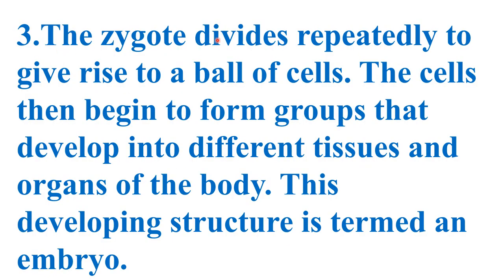The zygote divides rapidly to give rise to a ball of cells. The cells then begin to form groups that develop into different tissues. Cells make tissues, tissues make organs, organs make organ systems, and organ systems make an organism. This developing structure is termed the embryo.